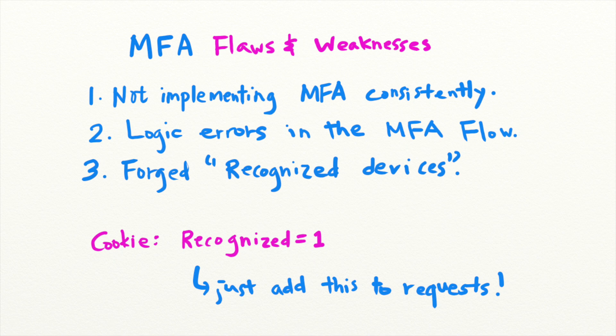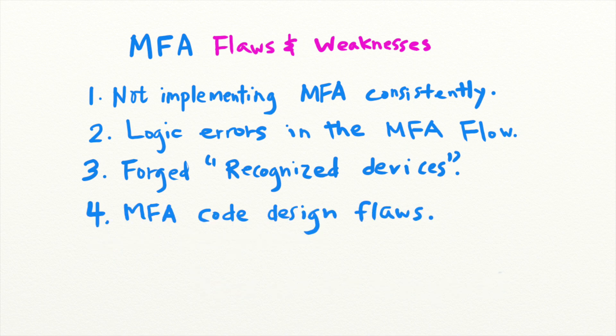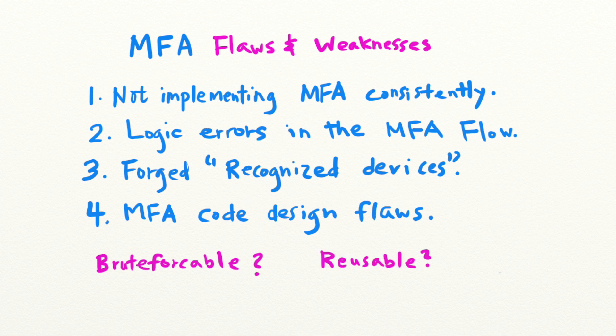Attackers might also take advantage of poorly designed MFA code generation and validation systems. Since MFA codes are often four to six digit numbers, attackers might brute force the codes if no rate limiting is in place. Alternatively, if an application does not invalidate each code after use, attackers may reuse previous codes. And if codes are not randomly generated, attackers might also try to reverse the generation algorithm.